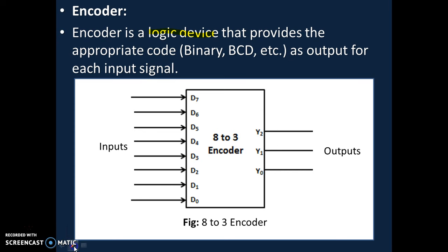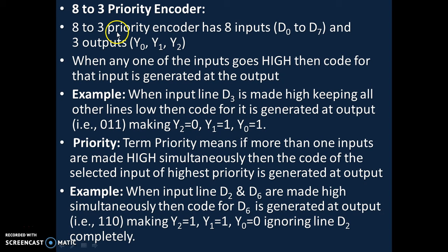Here we have an 8-to-3 priority encoder. In the 8-to-3 encoder we have 8 inputs from D0 to D7 and 3 outputs from Y0 to Y2. So the 8-to-3 encoder indicates 8 inputs and 3 outputs. This priority encoder has 8 inputs D0 to D7 and 3 outputs Y0, Y1, and Y2.